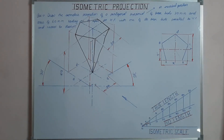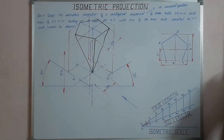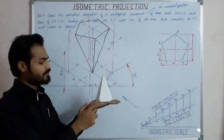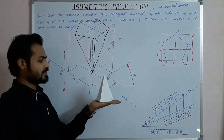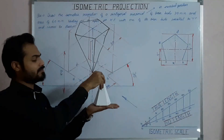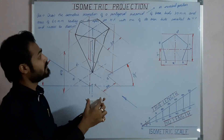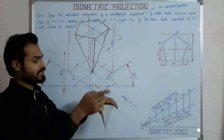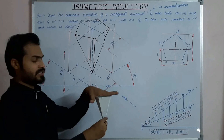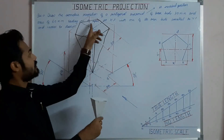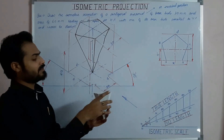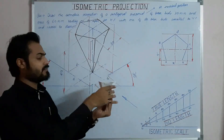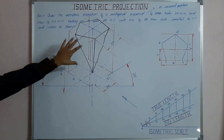So for the same dimensions we have three different cases. In the first case, the base is resting on HP with edge of its base parallel to VP and near to observer. In the second case, the pyramid is inverted with base on HP. In the third case, the pentagonal pyramid rests on its apex on HP with an edge of its base parallel to VP and in front of the observer.